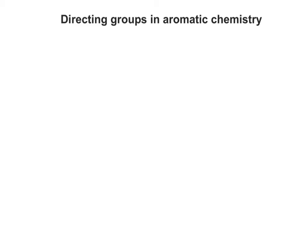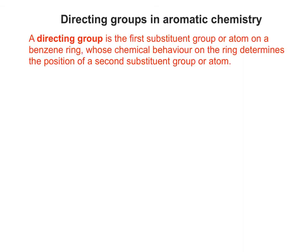Hello and welcome to this short introductory clip on the idea of directing groups in aromatic chemistry. Essentially, a directing group can be thought of as the first substituent group or atom on a benzene ring whose chemical behaviour on that ring determines the positioning of a second substituent group or atom.